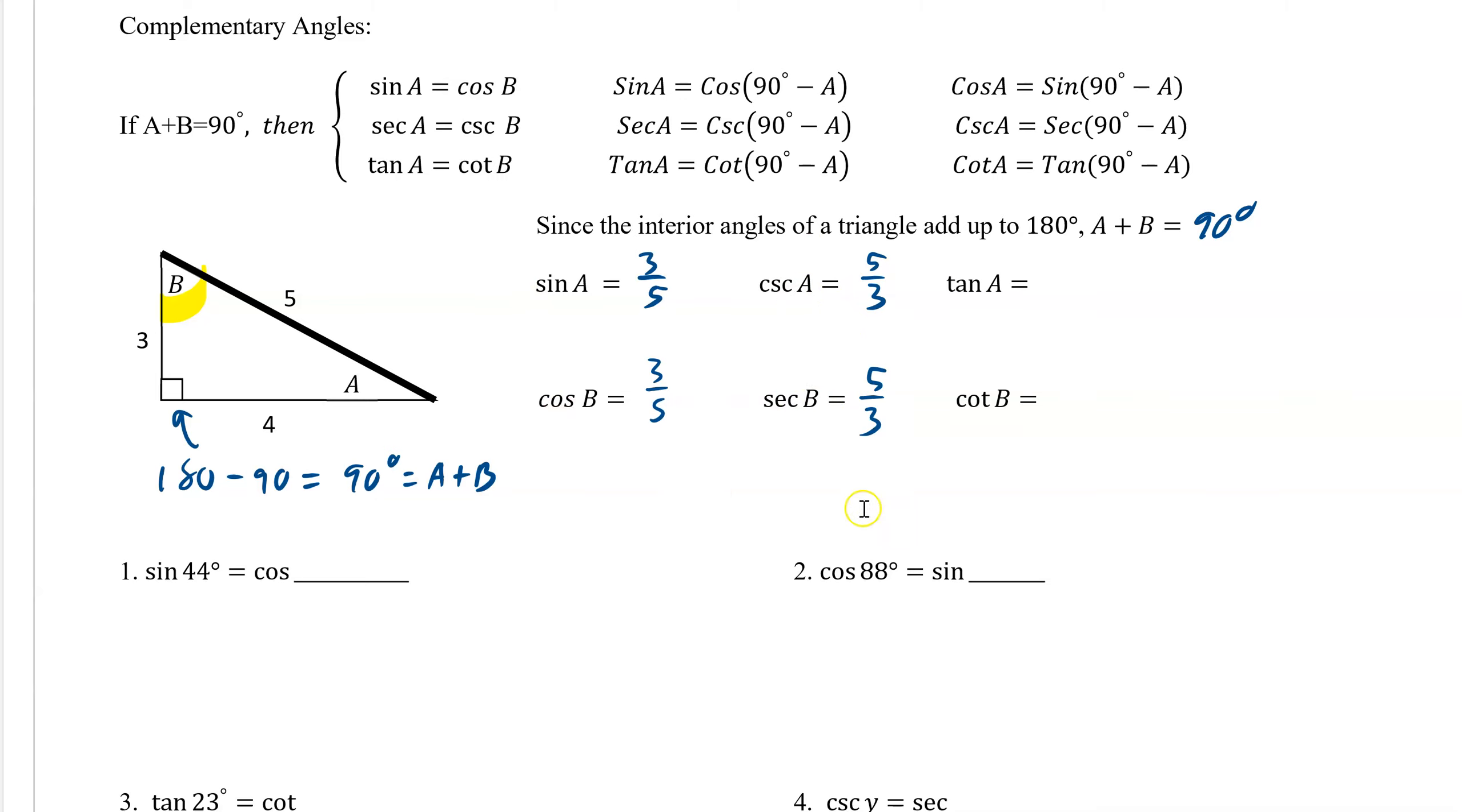And your sine and cosine would be equal. And even your tangent and cotangent. So tangent a is 3 over 4. And then we go to b and b would be, for cotangent, 3 over 4. Remember, it's adjacent over opposite. So they're equal.